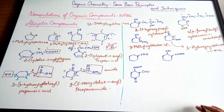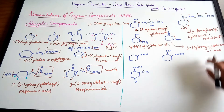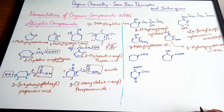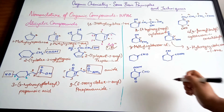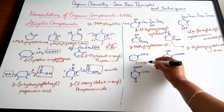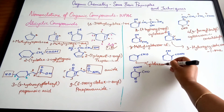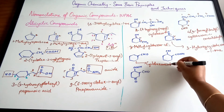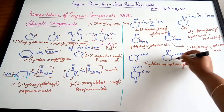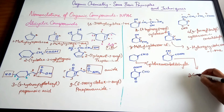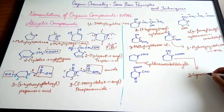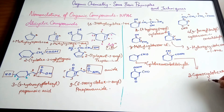When the alicyclic ring is attached to a functional group containing a carbon atom not part of the ring, that carbon must be included separately in the name. CHO becomes 'carbaldehyde.' For a compound with both COOH and CN, since carboxylic acid has more priority than cyano, the name is 2-cyanocyclohexane-1-carboxylic acid.